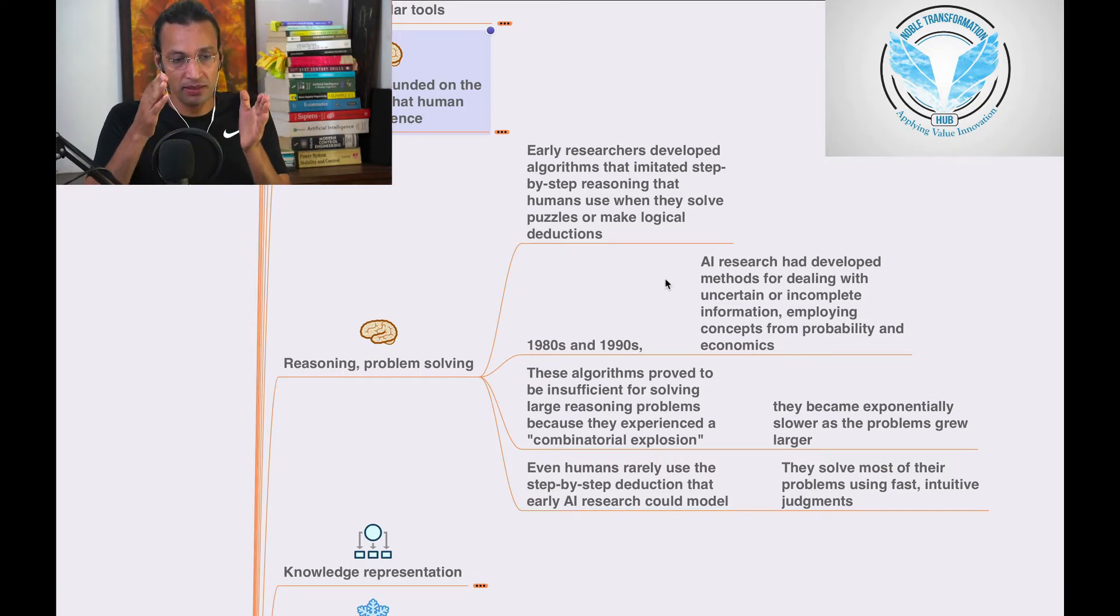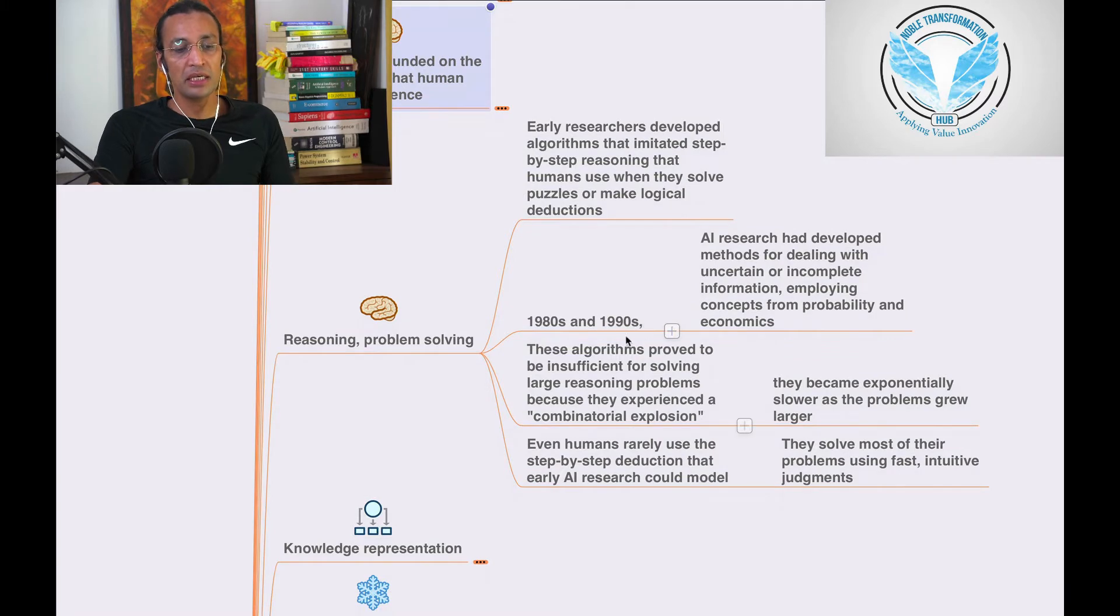When we solve puzzles, we use reasoning. We humans step-by-step solve puzzles, we play games and use logical deduction. This same approach was used by researchers for AI in 1980 and 1990s.